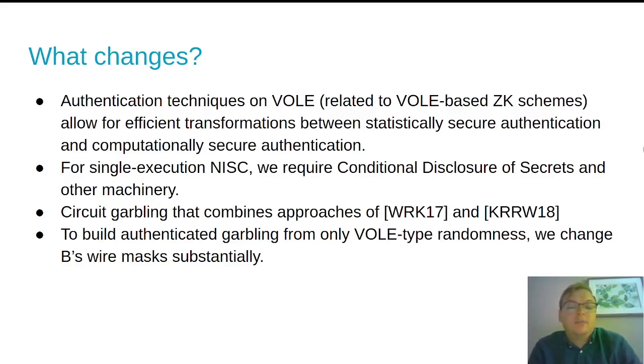And additionally, because we are reducing the number of rounds, we can no longer have back-and-forth communication to authenticate the circuit garbling. And so we have to sort of combine the FreeXOR technique of Wang et al. and the Zahur half-gate technique of Katz et al. to get the garbling right. And I'm going to discuss one aspect of our construction in a little bit more detail for the VOLE-type randomness, where we change the way B's wire masks work.